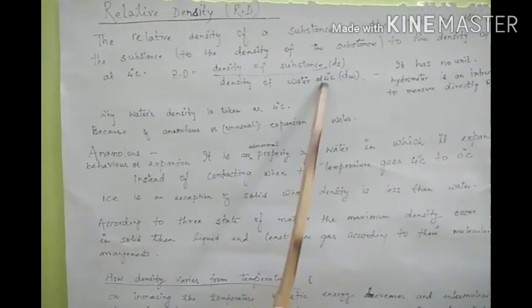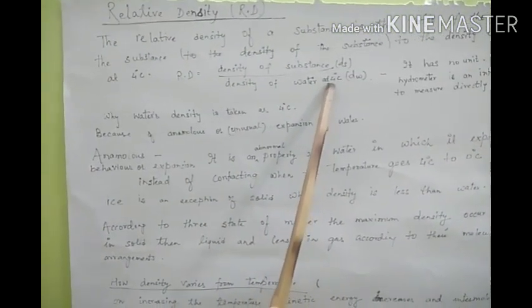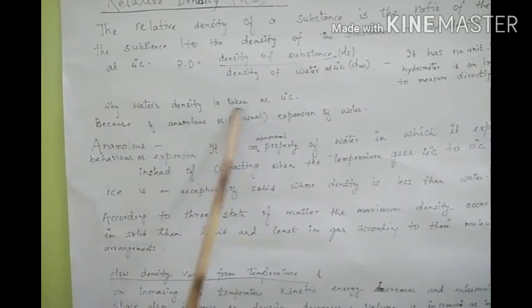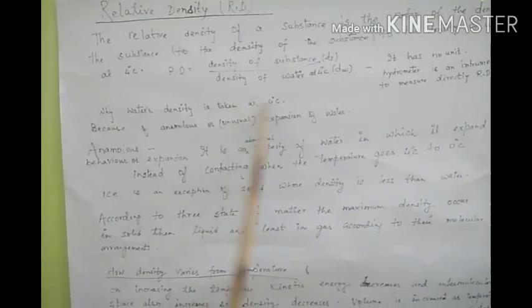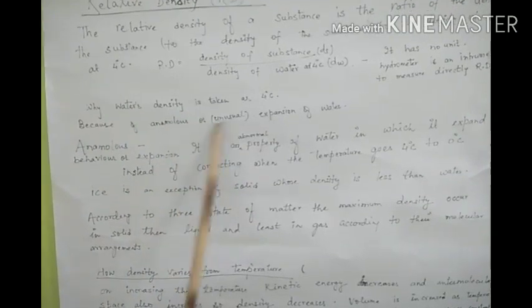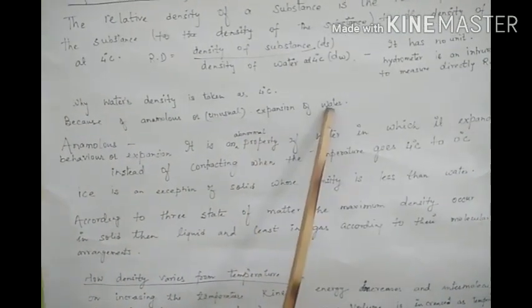Here we have taken water at 4 degrees Celsius. Why is water density taken at 4 degrees Celsius? Because of anomalous or unusual expansion of water.